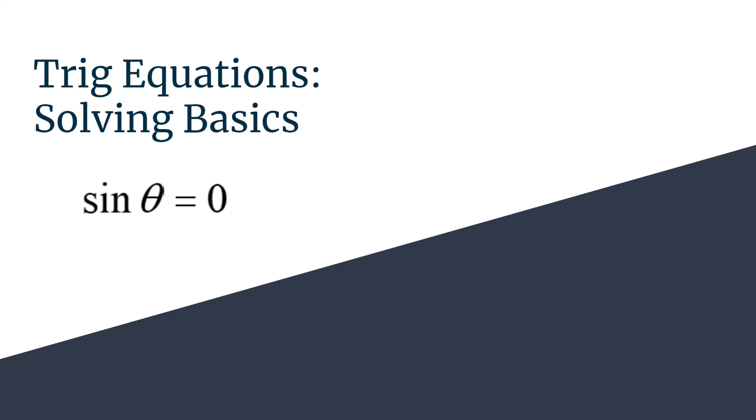This is very similar to finding exact values, just working in the other direction. We should think which angle or angles have a sine of zero. If you're thinking about that on the unit circle, that means your angle is where you have no vertical movement, because sine is your y coordinate. So let's take a look at this with our method.